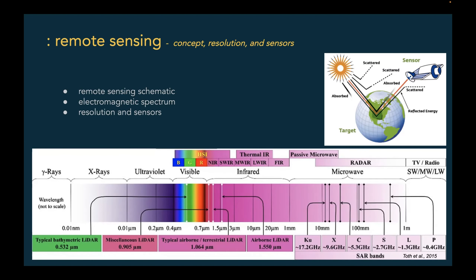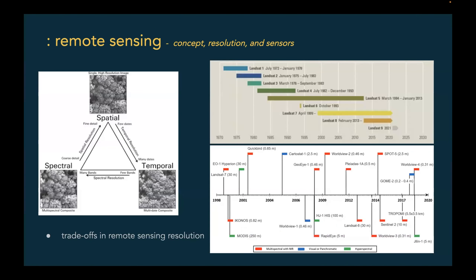To understand land and vegetation dynamics and their impact on natural resources, we typically rely on sensors that collect multispectral imagery. One reason is the types of resolution. There are four types: spatial, spectral, radiometric, and temporal. Spatial resolution refers to the size of the smallest feature detectable by satellite sensors. Spectral resolution refers to the sensor's ability to measure specific wavelengths of the electromagnetic spectrum. Radiometric resolution refers to the number of possible data values in each band — for example, 2-bit, 8-bit, and 16-bit. Temporal resolution refers to the time between images.